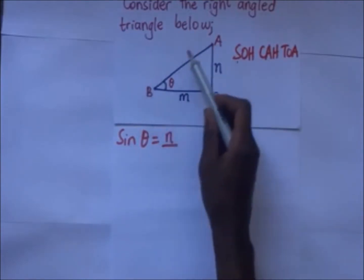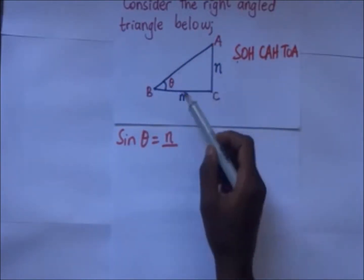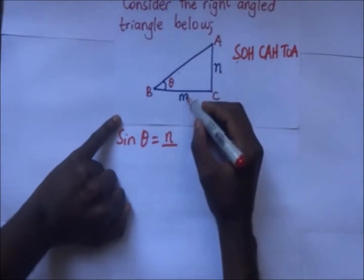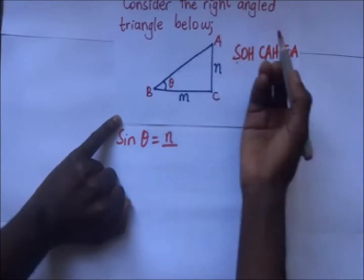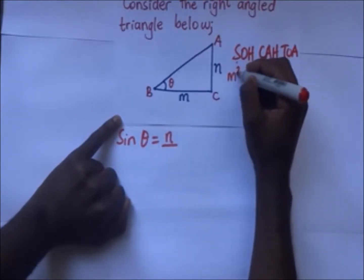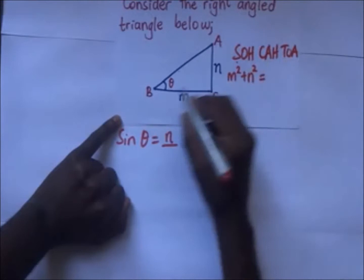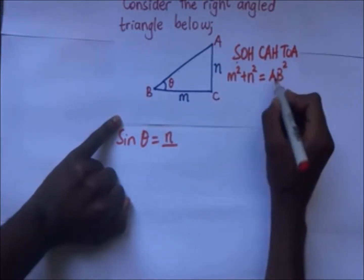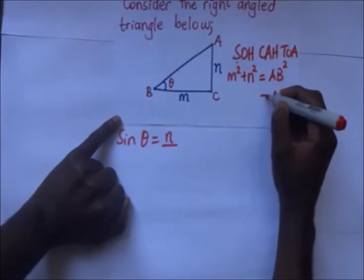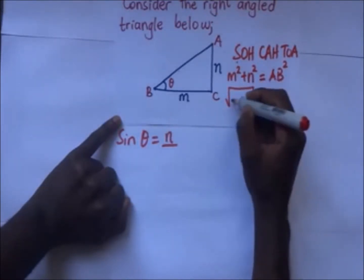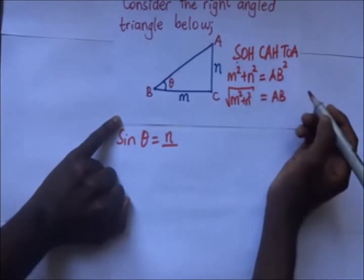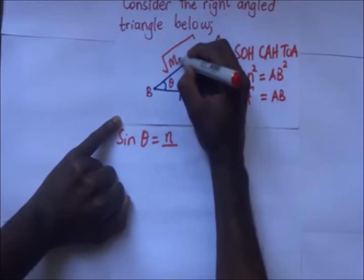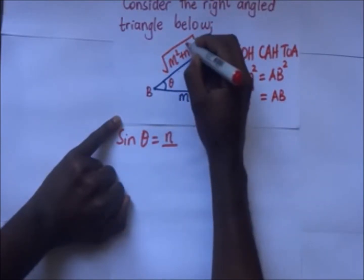Let's try and first find this hypotenuse using Pythagoras theorem. When we use Pythagoras theorem it means M squared plus N squared is equal to the hypotenuse squared — that is AB squared. When we make AB the subject of the formula, AB is simply going to become the square root of M squared plus N squared. So this hypotenuse is the square root of M squared plus N squared.